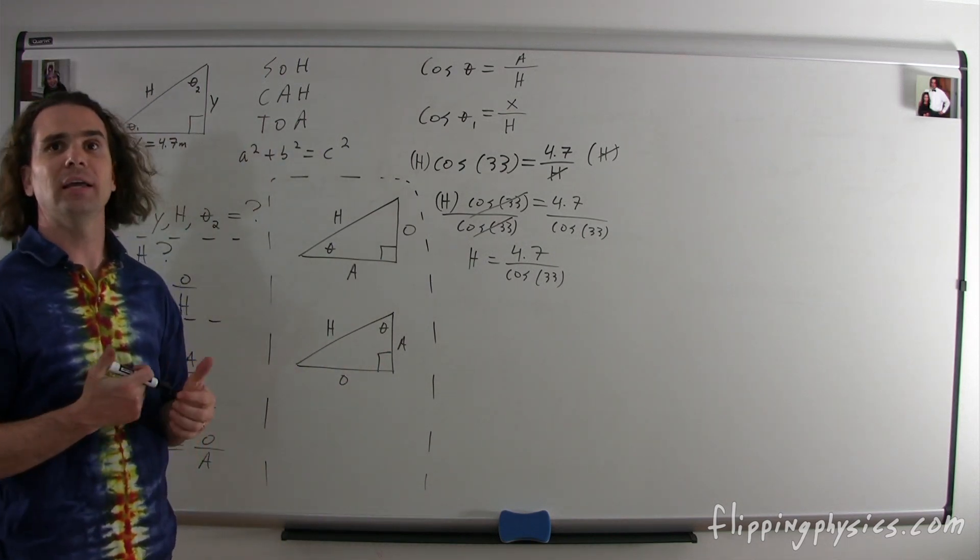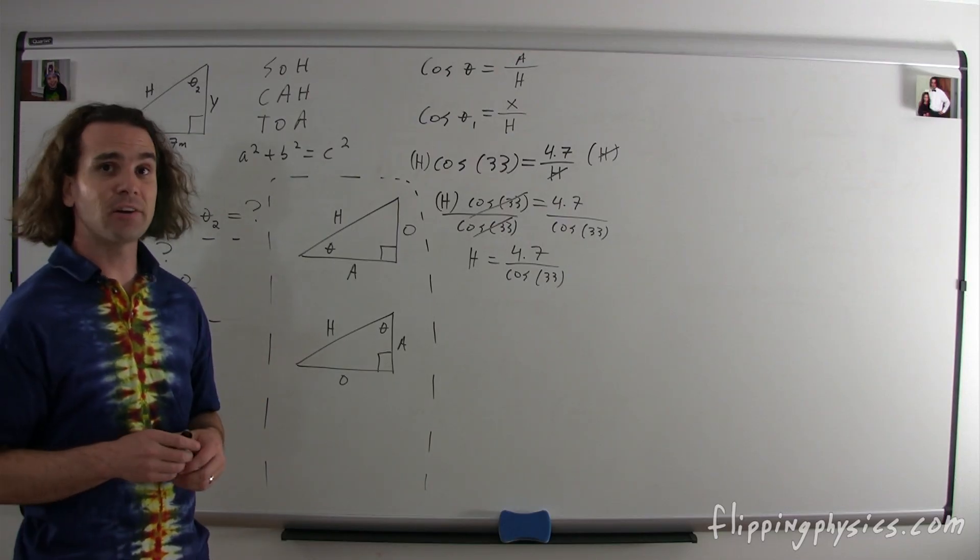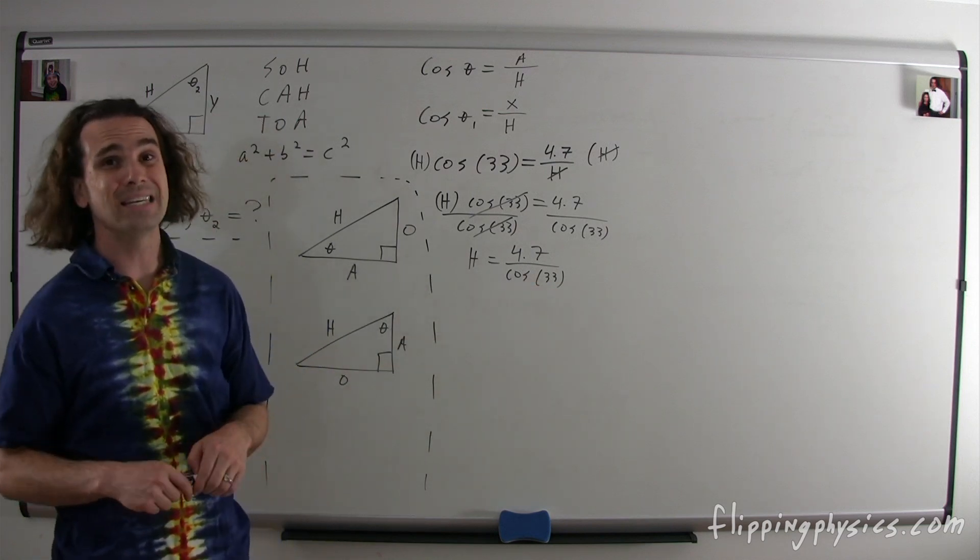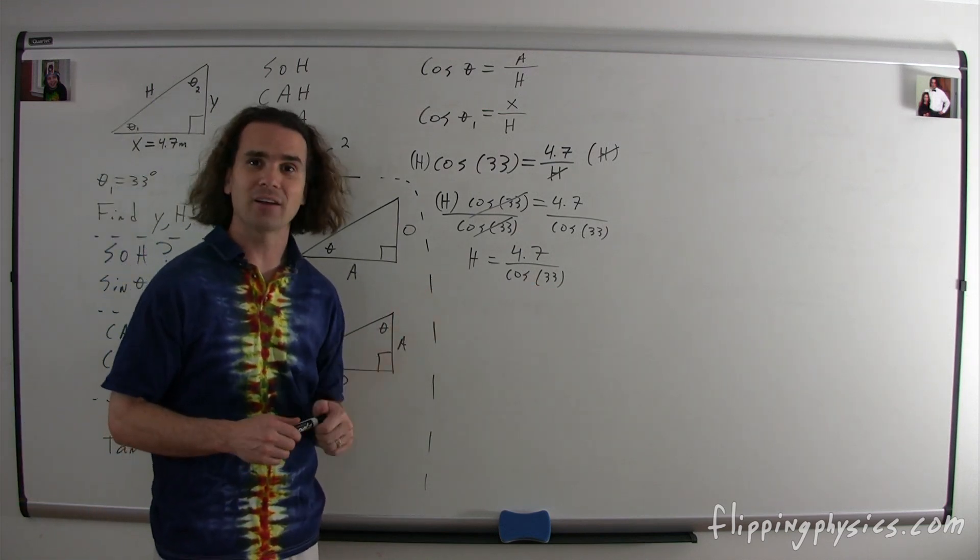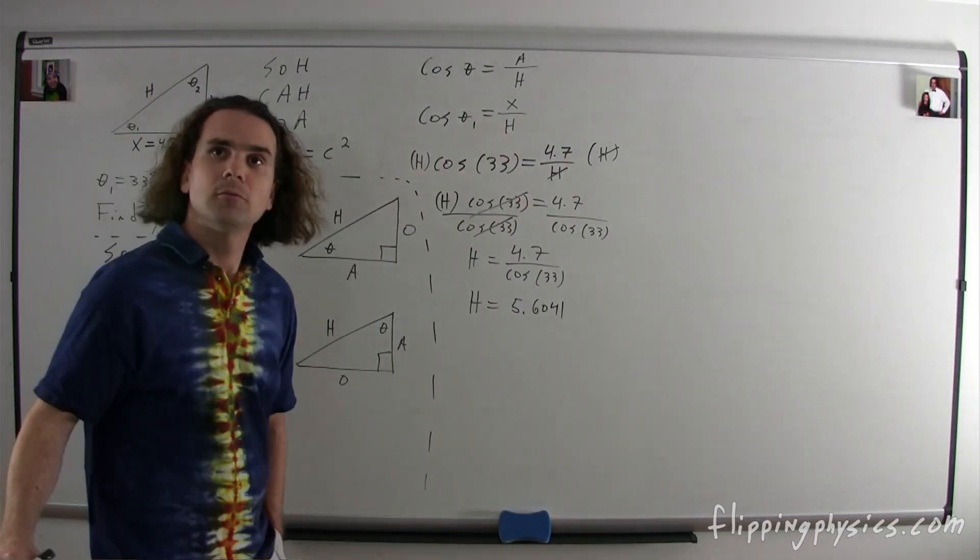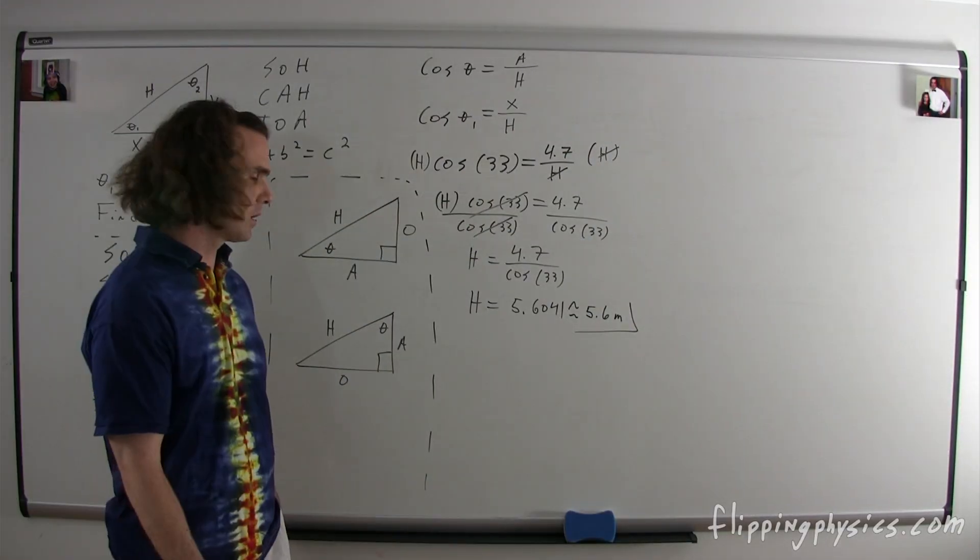Bobby, what do we get for an answer? Negative 354? Be careful, you need to make sure that your calculator is in degree mode. Your calculator is in radian mode. So please be careful of that. Because our angles are in degrees, we need our calculators in degree mode. Oh, dang it. It's 5.6041. And because the least number of significant figures from our givens was 2, we need to round to 2 sig figs or 5.6 meters. Very nice.